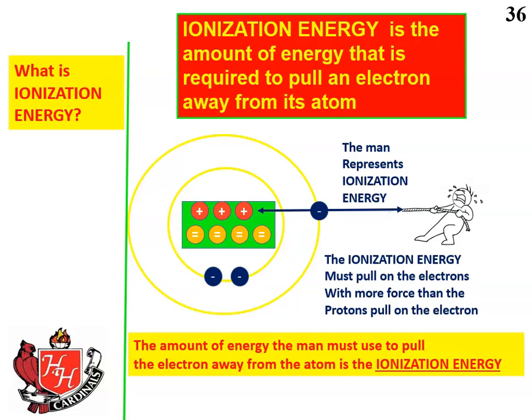All right, this is day 37, and it's the assignment for April the 16th. It deals with ionization energy, electronegativity, and atomic radius — all subjects that we've talked about before in class. This is a chance to review it, and it will count as part of your fourth quarter grade, but it is all review material.